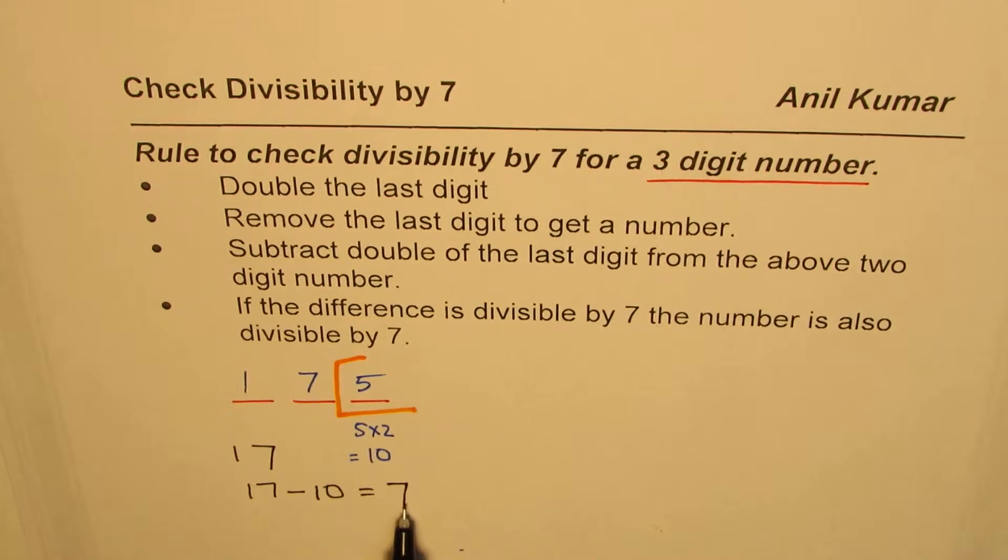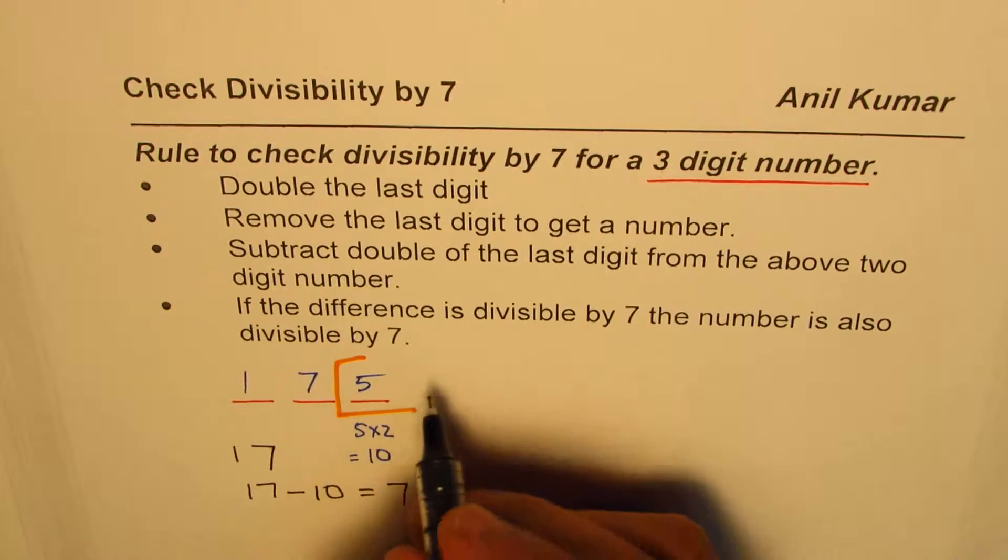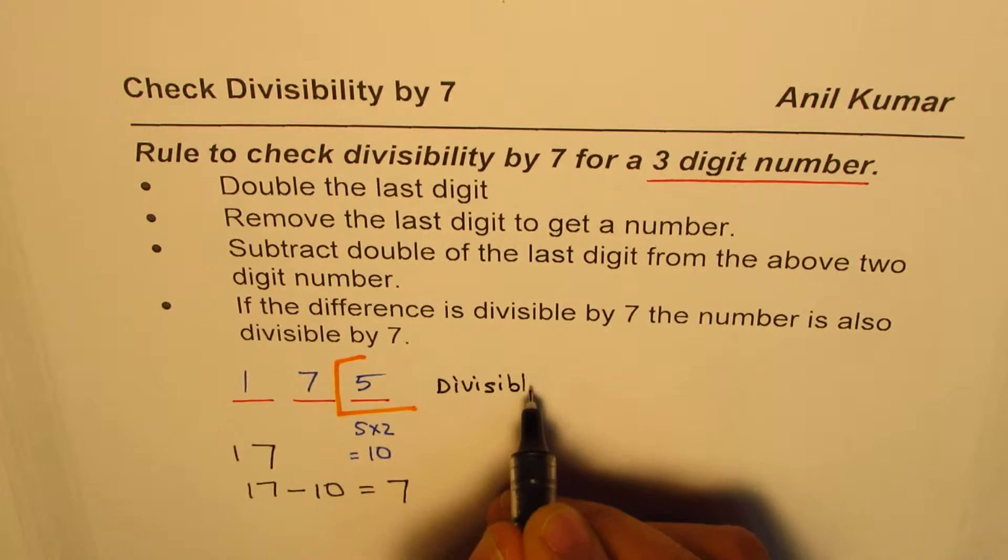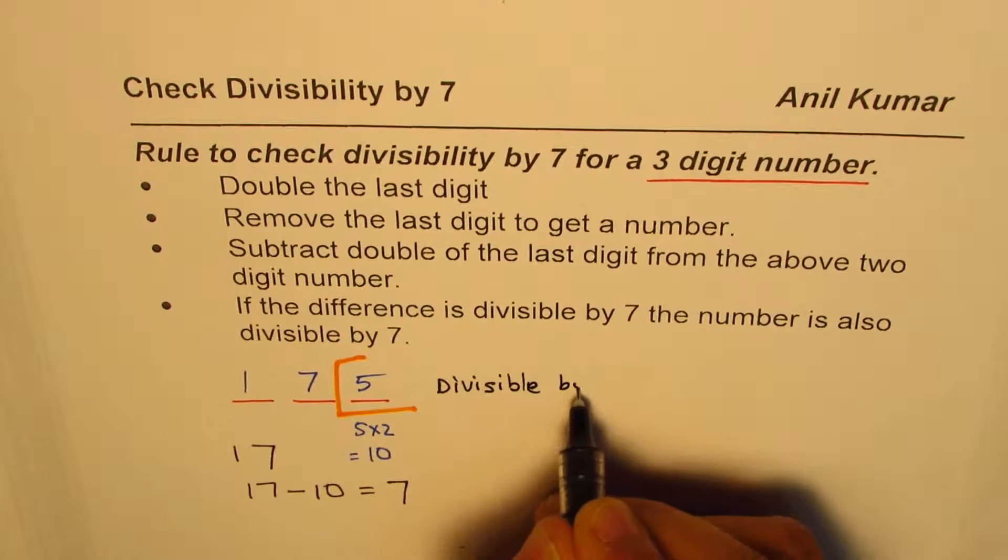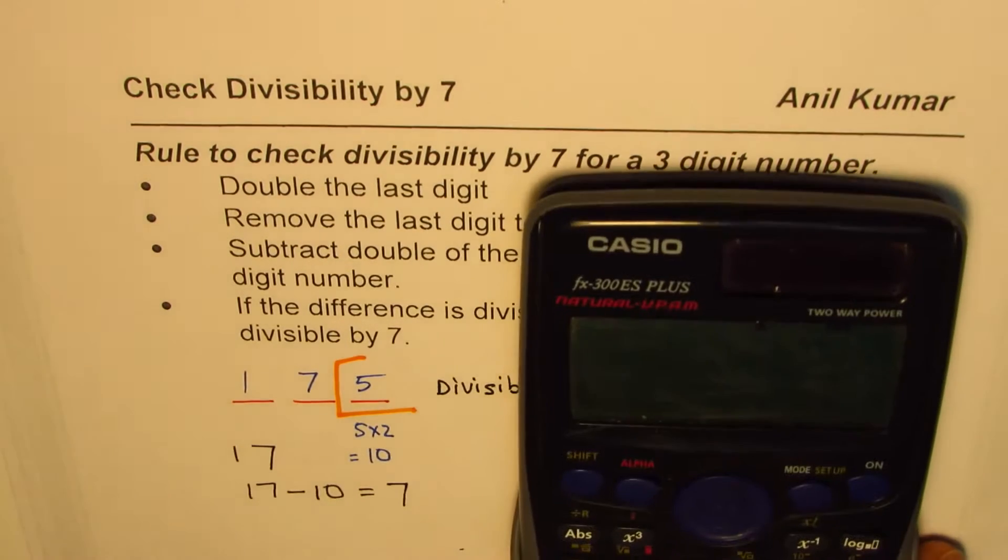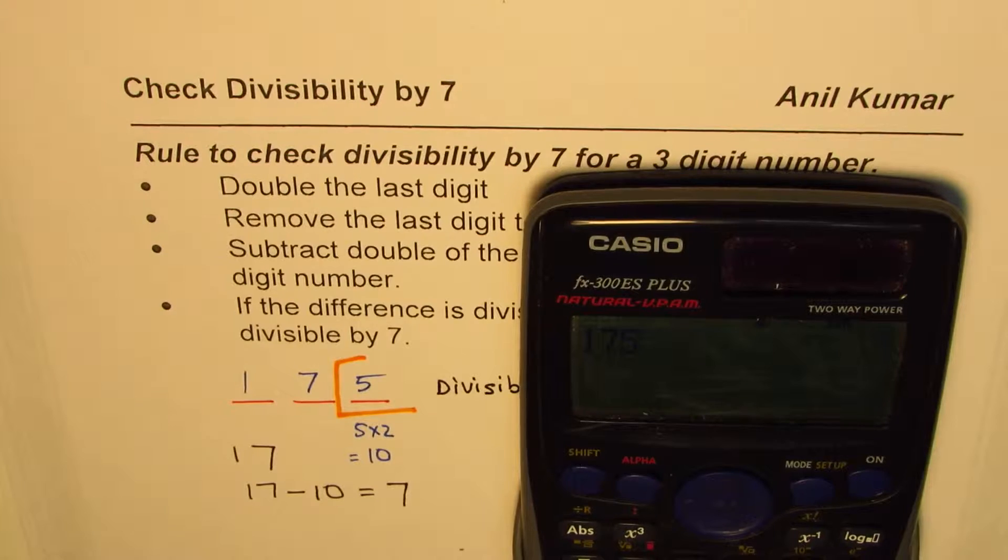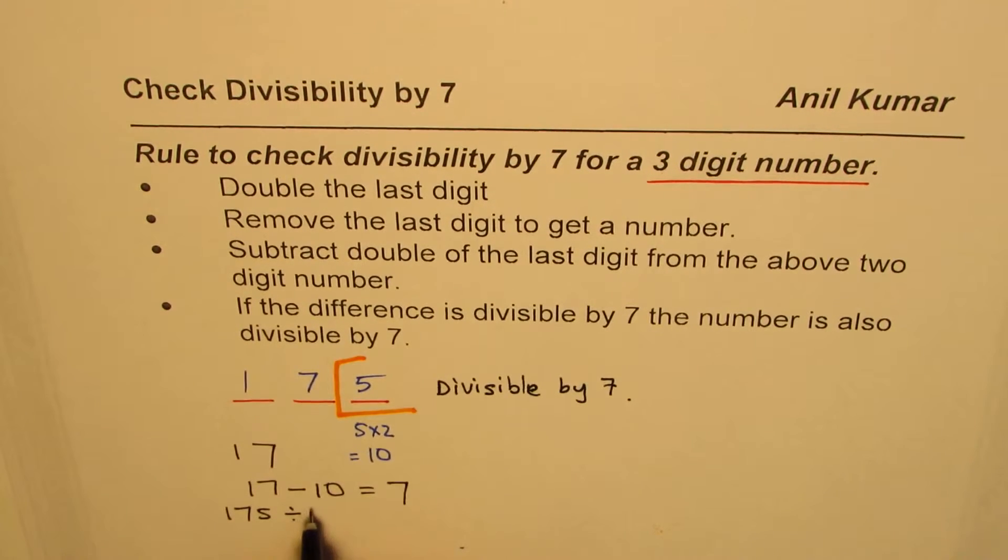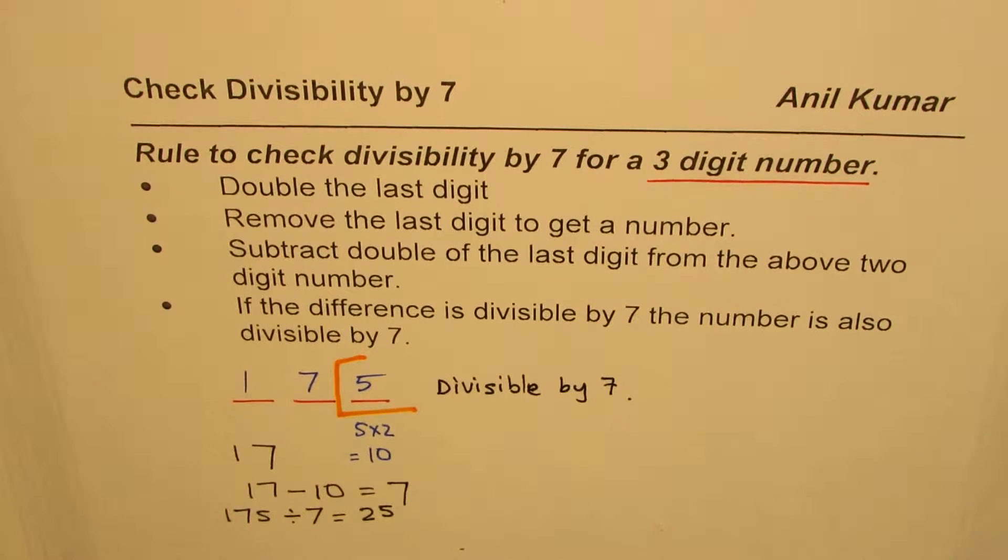Yeah, 7 is divisible by 7. Let me use a calculator to check. We have 175 divided by 7, what do I get? I get 25. It's a whole number, so it is indeed divisible. We have checked that 175 divided by 7 is indeed 25.